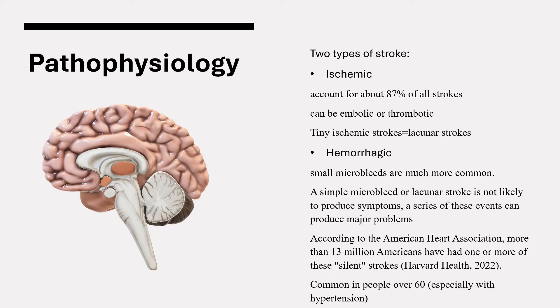Each of these major types of strokes has a milder counterpart. Although major hemorrhagic strokes are impossible to overlook, MRI studies show that small microbleeds are much more common. Similarly, many people have tiny ischemic strokes classified as lacunar strokes because of their small size. Although a simple microbleed or lacunar stroke is not likely to produce symptoms, a series of these events can produce major problems including memory loss or cognitive dysfunction. According to the American Heart Association, more than 13 million Americans have had one or more of these silent strokes, which are particularly common in people over 60, especially if they have hypertension.